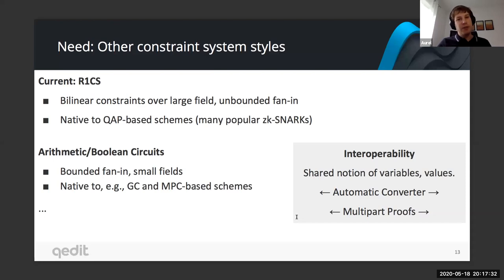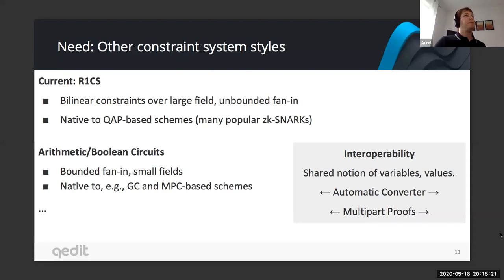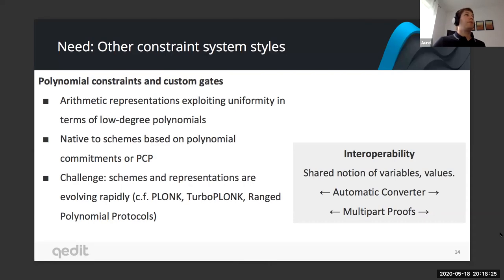We can also make the converter smarter to find optimizations, since sometimes something can be more efficient in R1CS or in arithmetic circuits, and there's no limit to how smart the converter can become. We are also interested in multi-part proofs — proofs that combine both formats, needing two proofs with two different proving systems, which we want to combine together. The same discussion applies to boolean circuits — it's again almost a subset, very similar: using a field of one-bit values and specifying how to interpret the gates.